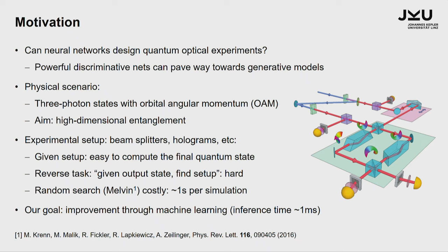What Mario Gren has done for a couple of years already: he implemented a random search. The algorithm was called Melvin, and it just tried out random setups, looked at the final state, and classified its interest — whether it's a maximum entangled state and what is the Schmidt rank. This is very costly, about one second per simulation. Our goal was to improve this through machine learning, because inference times in the trained neural net are very fast — milliseconds or less.